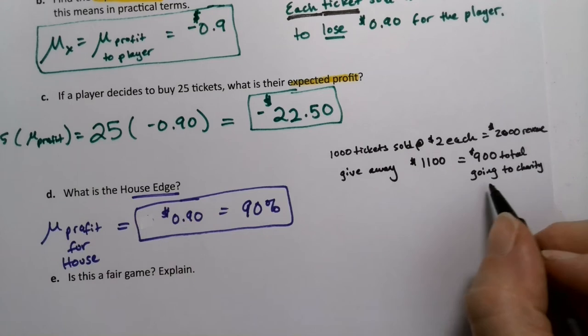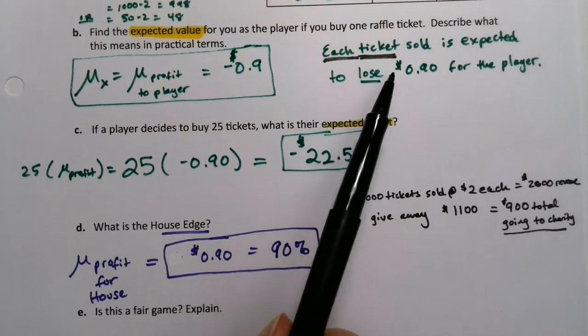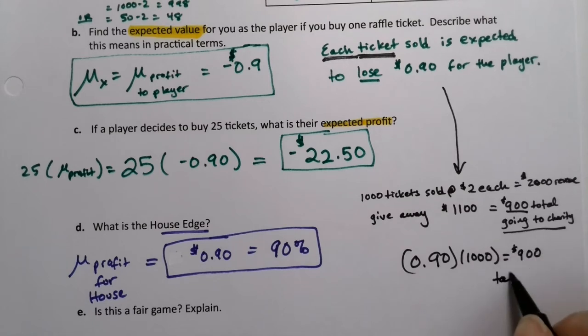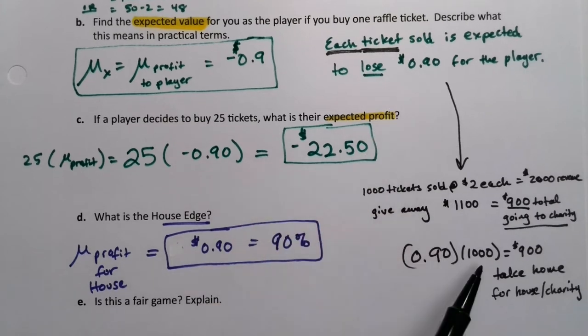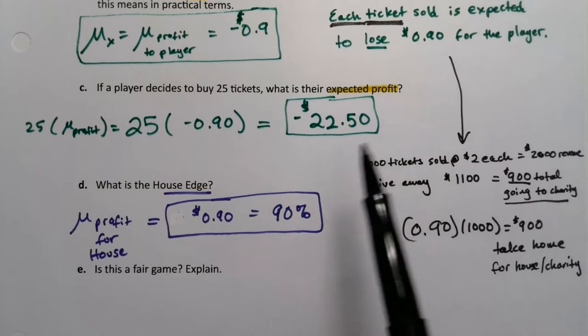And if you take $900 total and you divide it amongst the thousand tickets, you're at 90 cents. So there's $900 total going to the charity. Every player expects to lose 90 cents. A thousand tickets were sold. So that means that there's 900. So another way to put it is 0.90 times a thousand means $900 take home for the charity or the house in this case. It's not that any one ticket loses 90 cents. It's that it averages out that way for the thousand tickets overall.